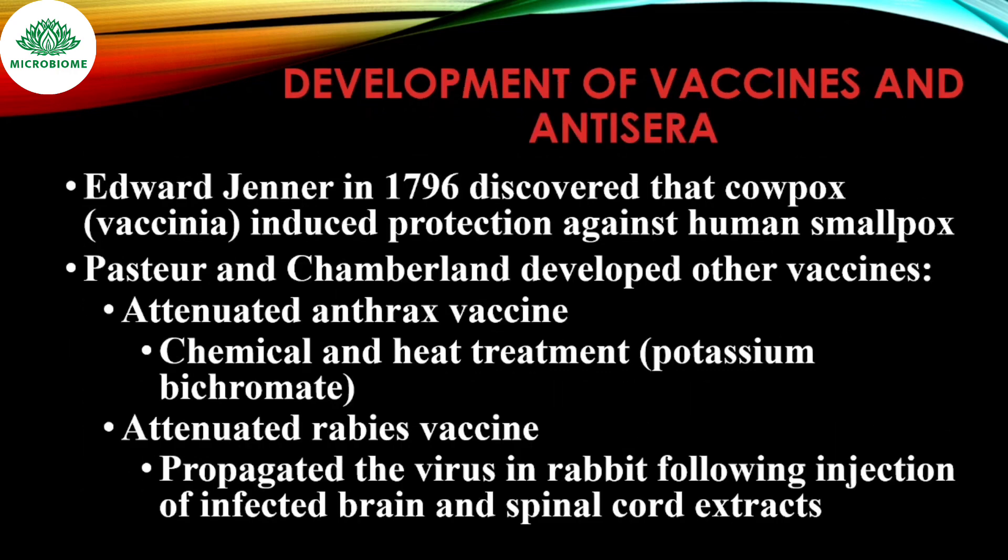The development of vaccines and antisera: Edward Jenner in 1796 discovered that cowpox induced protection against human smallpox. Pasteur and Chamberland developed other vaccines — an attenuated anthrax vaccine using chemical and heat treatment with potassium bichromate, and an attenuated rabies vaccine propagated in rabbit tissue following injection of infected brain and spinal cord extracts.